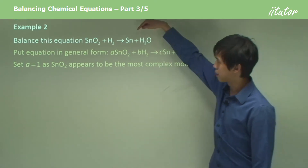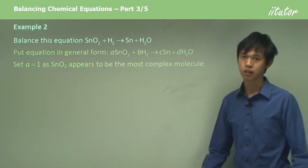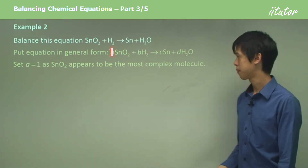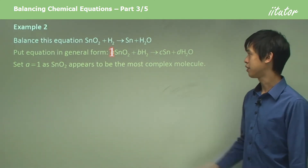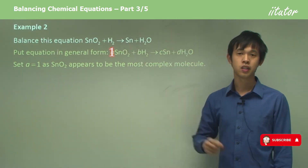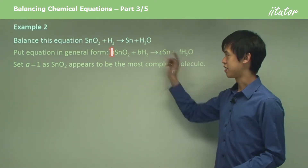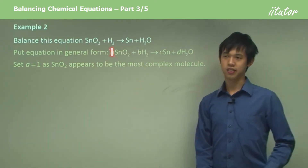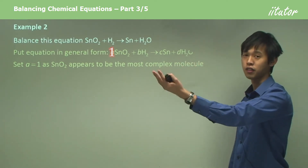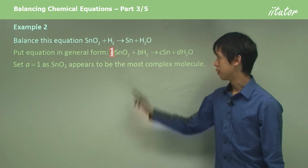So this is the most complex compound. We set A to be 1. Alternatively, we could set the pure metal to be 1, but the result is the same. Let's just set this one to be 1 — working left to right — so A equals 1.